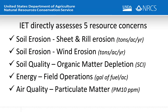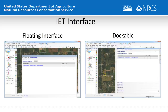Air quality particulate matter is expressed in the form of PM10 parts per million. Since the IET interface is an ArcMap add-in, the window is a floating window that can be docked at various locations in the ArcMap window or moved to a second monitor. The IET interface is divided into several panes for entering information, such as the crops operations pane, the soil climate pane, the slope practice pane, and others.